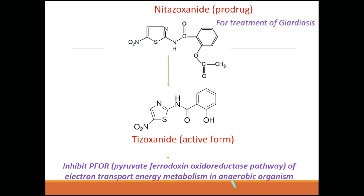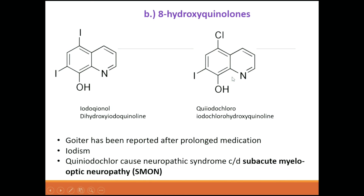Nitazoxanide is a prodrug. It is converted to tizoxanide, which inhibits PFOR — pyruvate ferredoxin oxido-reductase pathway — disrupting electron transport metabolism in anaerobic organisms. The 8-hydroxyquinoline group can cause Sub-Acute Myeloptic Neuropathy, which is an important side effect to note.